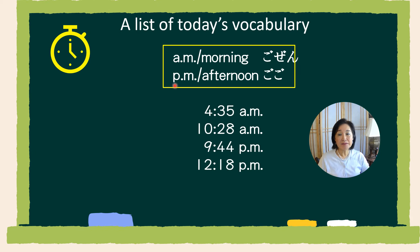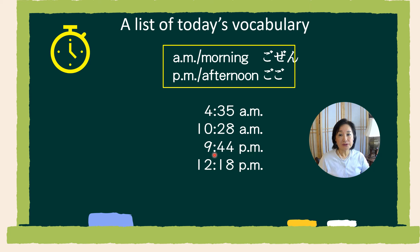To express am and pm, morning is ごぜん and afternoon is ごご. When you write the time in Japanese, you use am and pm just like English, but when you read the time, you say ごぜんよじさんじゅうごふん — you express am with the Japanese word ごぜん and put it in front of the time expression. This one would be ごぜんじゅうじにじゅうはっぷん. For pm you say ごごくじよんじゅうよんぷん, or ごごじゅうにじゅうはっぷん.